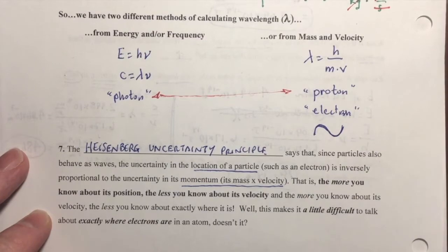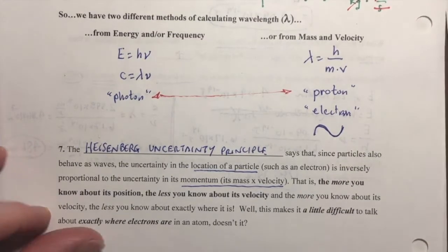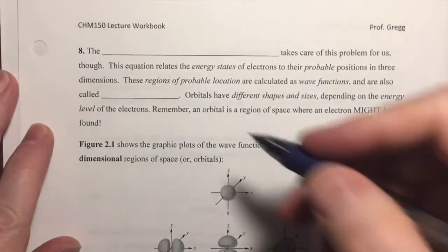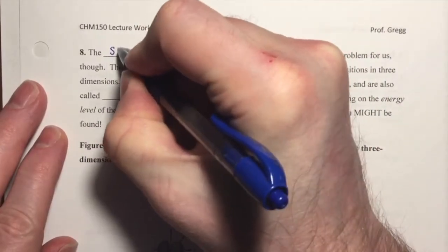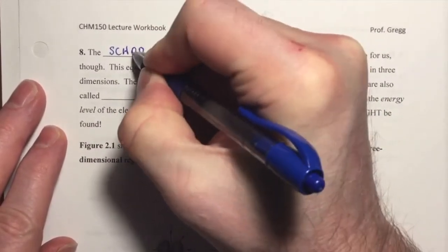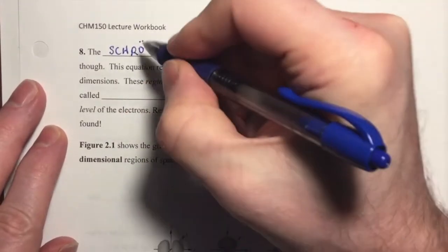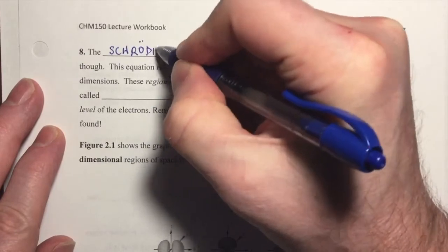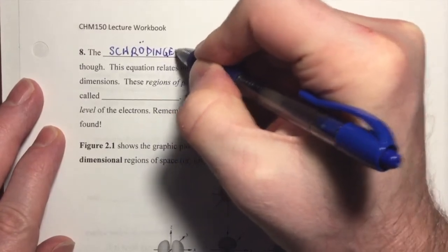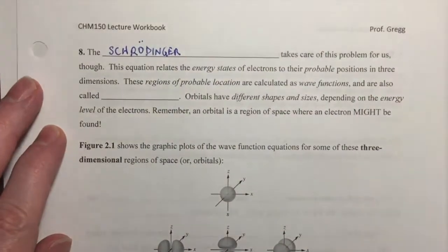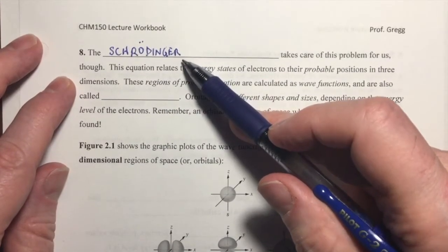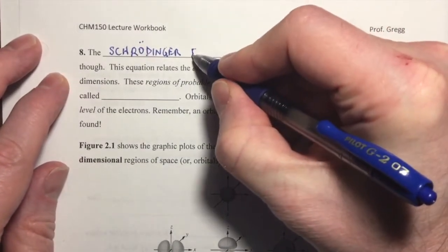So, another researcher comes along, and his name is Schrödinger, Erwin Schro, S-C-H-R-O, with an umlaut over the O, so we pronounce it Schrödinger.